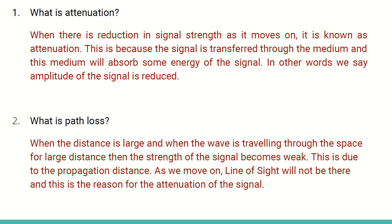What is attenuation? When there is a reduction in signal strength — normally when the signal moves on it gets slowed down, which means there is a loss or reduction in signal strength — that is called attenuation. A simple example: you are walking for a long distance, say about 10 kilometers. First kilometer you will be brisk, second kilometer you will be okay, third kilometer you will get tired. This can be called attenuation.